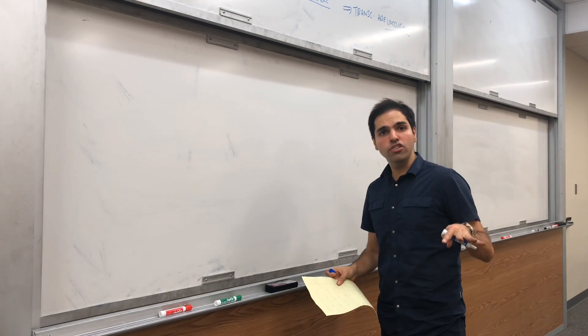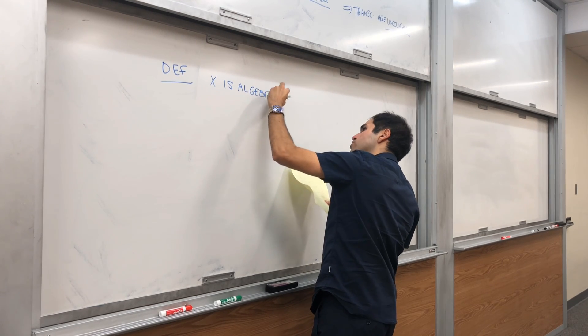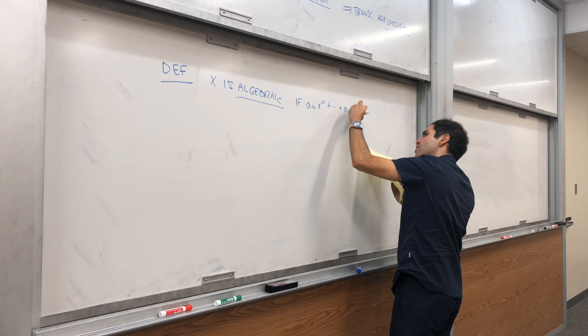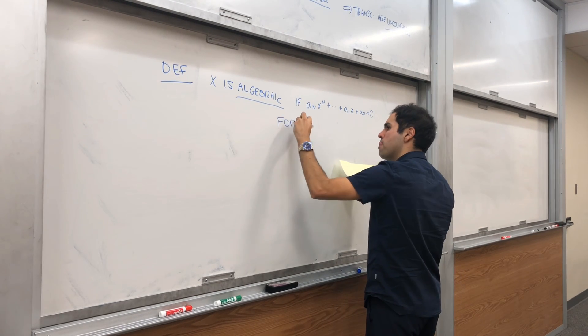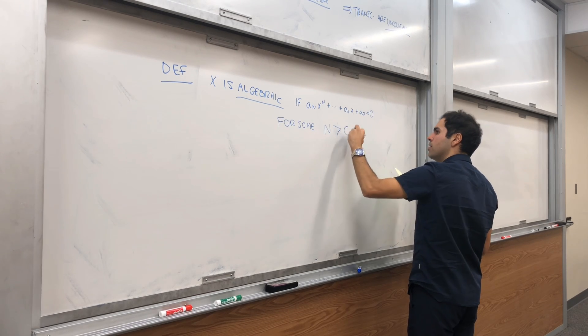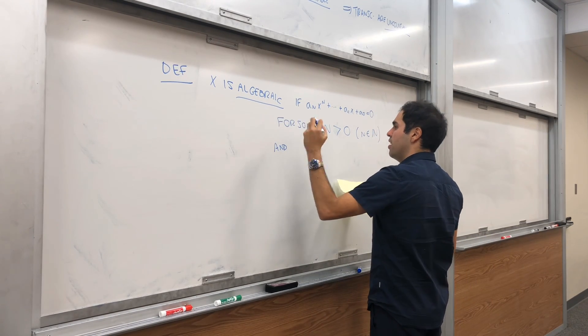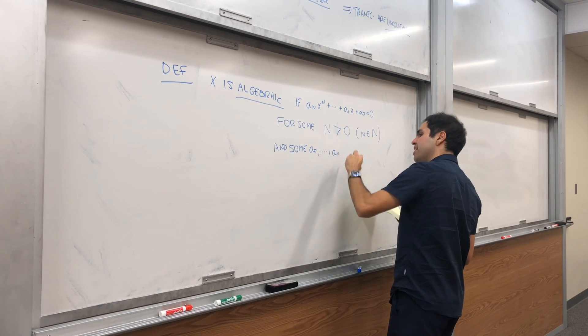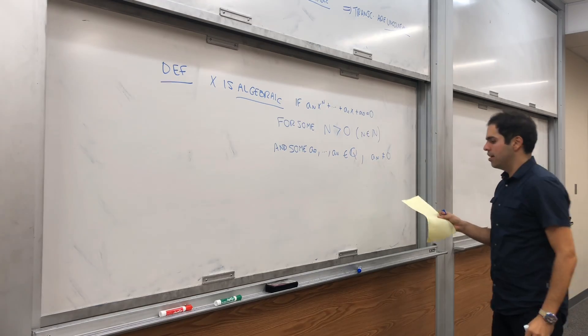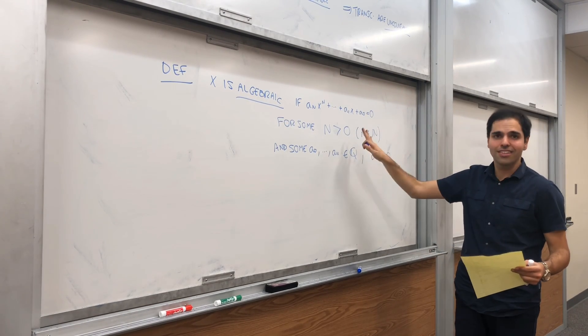So how do you prove that algebraic numbers are countable? First of all, here's a definition. X is algebraic if x is the root of a polynomial with rational coefficients: a_n x^n plus dot dot dot plus a_1 x plus a_0 equals 0 for some n, where n is a positive integer, and some a_0 dot dot dot up to a_n rational, where a_n is non-zero. In other words, x is algebraic if x is the zero of some polynomial with rational coefficients. That's all I'm saying.